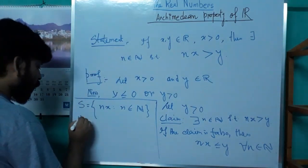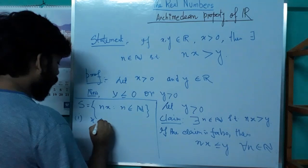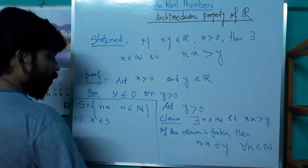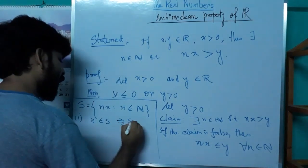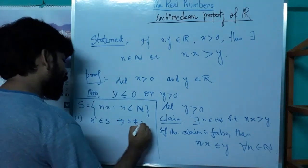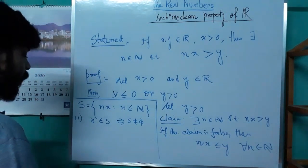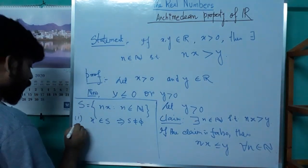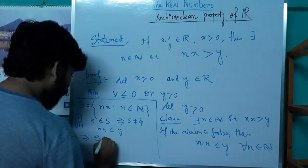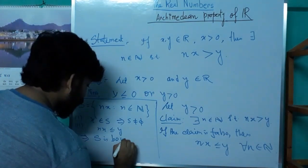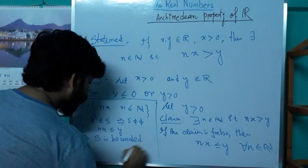The first observation is that x belongs to the set S, which implies S is non-empty. The second observation is that S is bounded above.